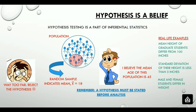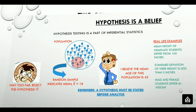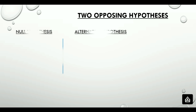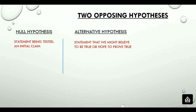A hypothesis test examines two opposing hypotheses about a population: the null hypothesis and the alternative hypothesis. The null hypothesis is a statement being tested — it is the initial claim. The alternative hypothesis is a statement that we might believe to be true or hope to prove true. A null hypothesis is denoted by H sub 0 and an alternative hypothesis is denoted by H sub 1. A null hypothesis always has an equality sign.